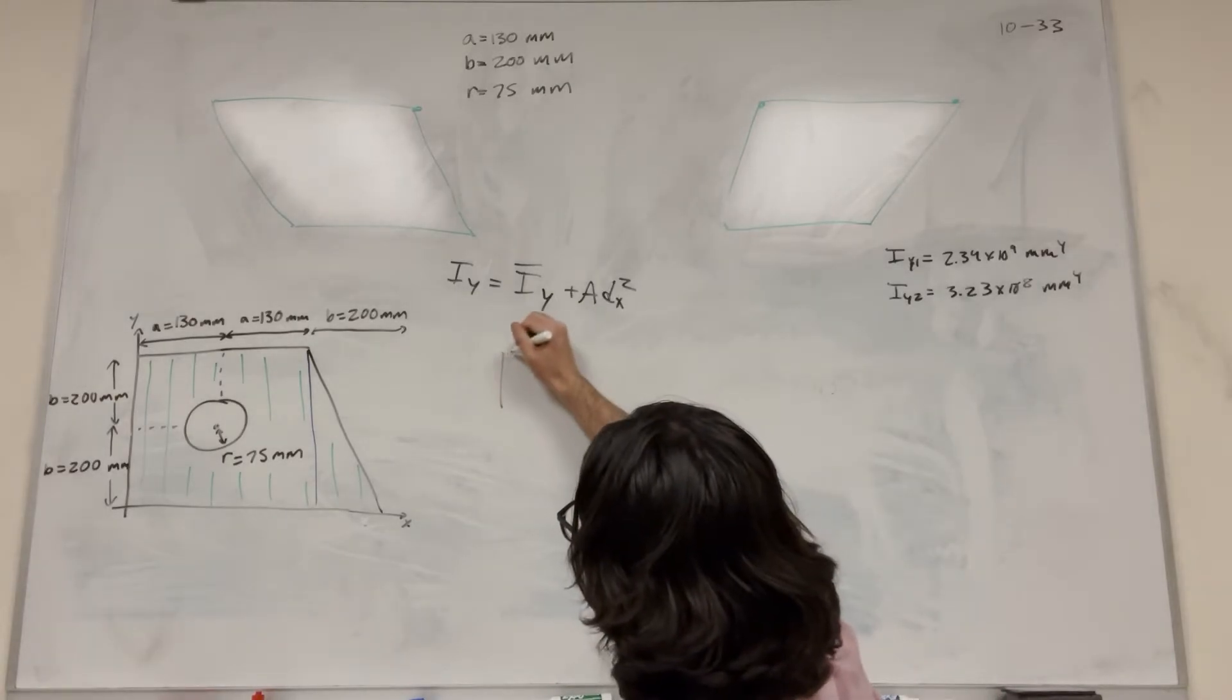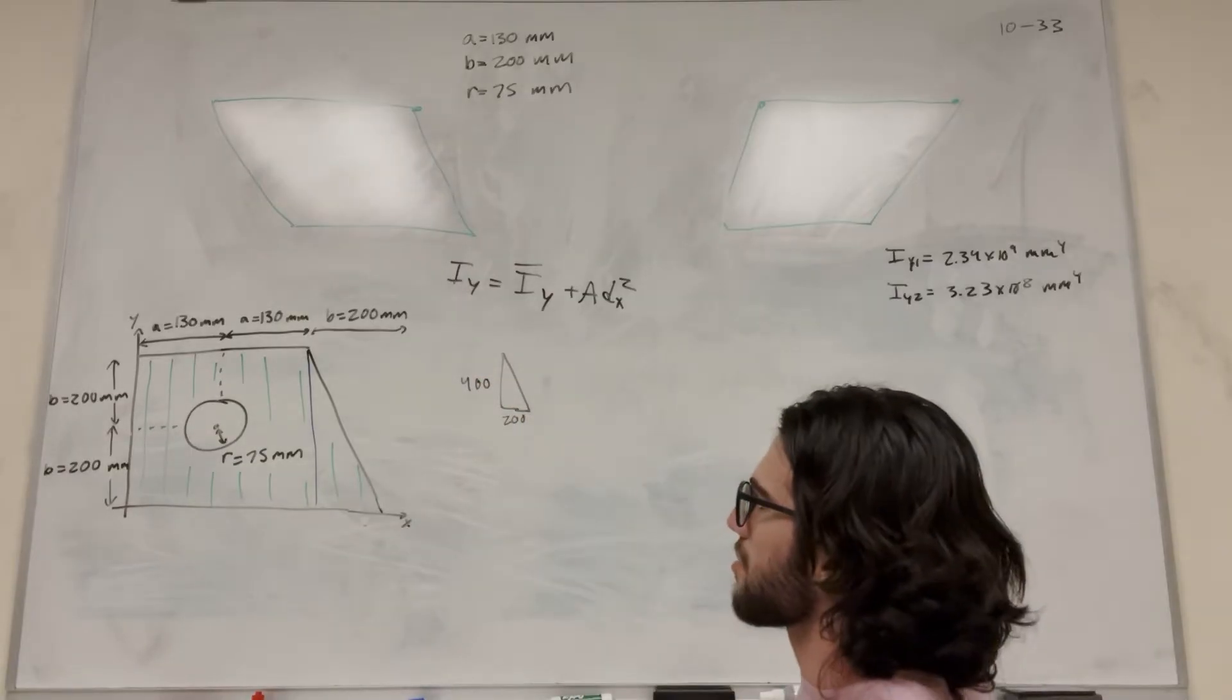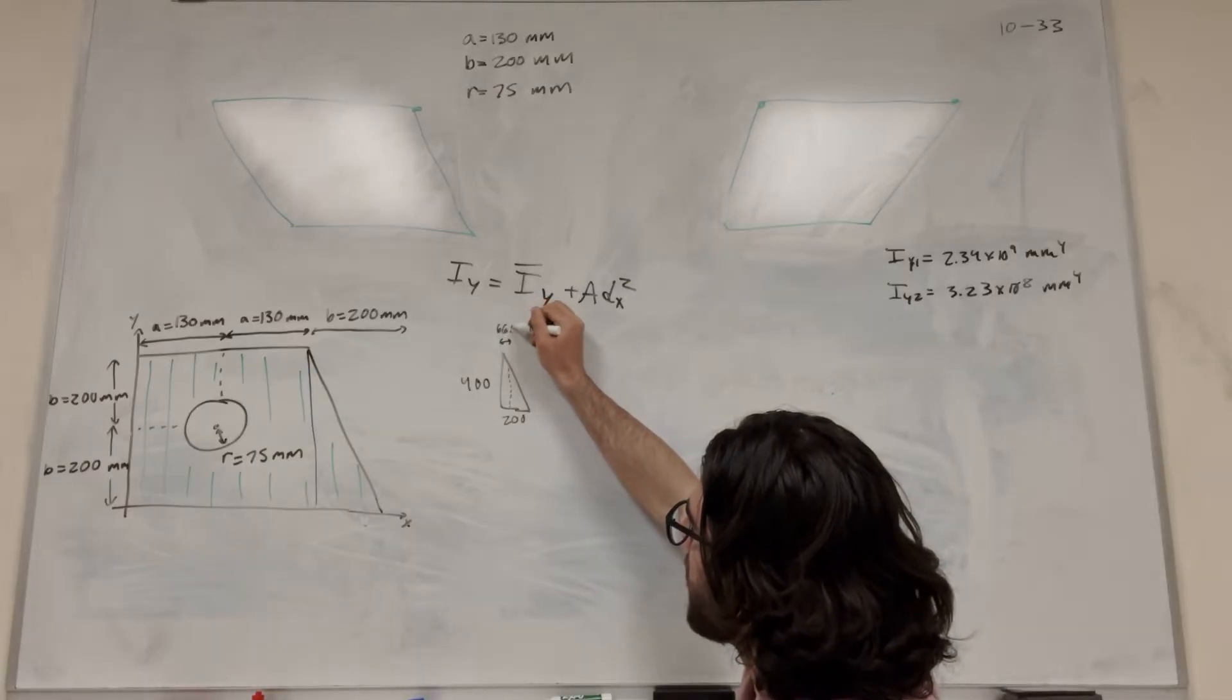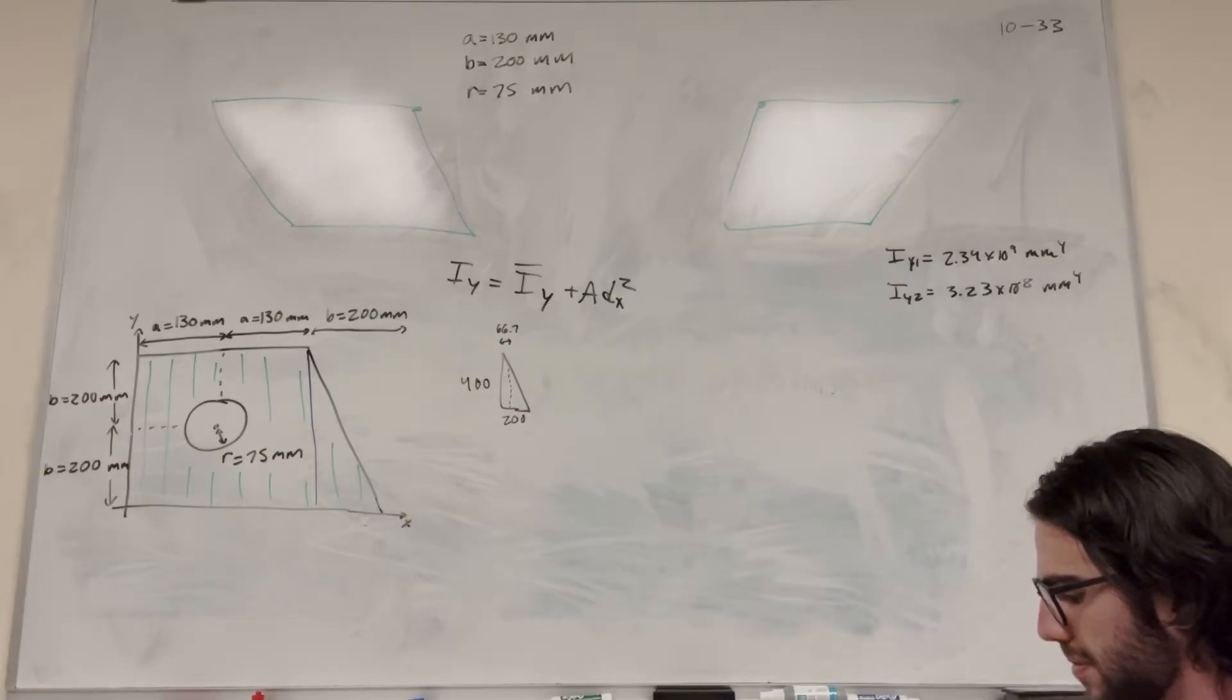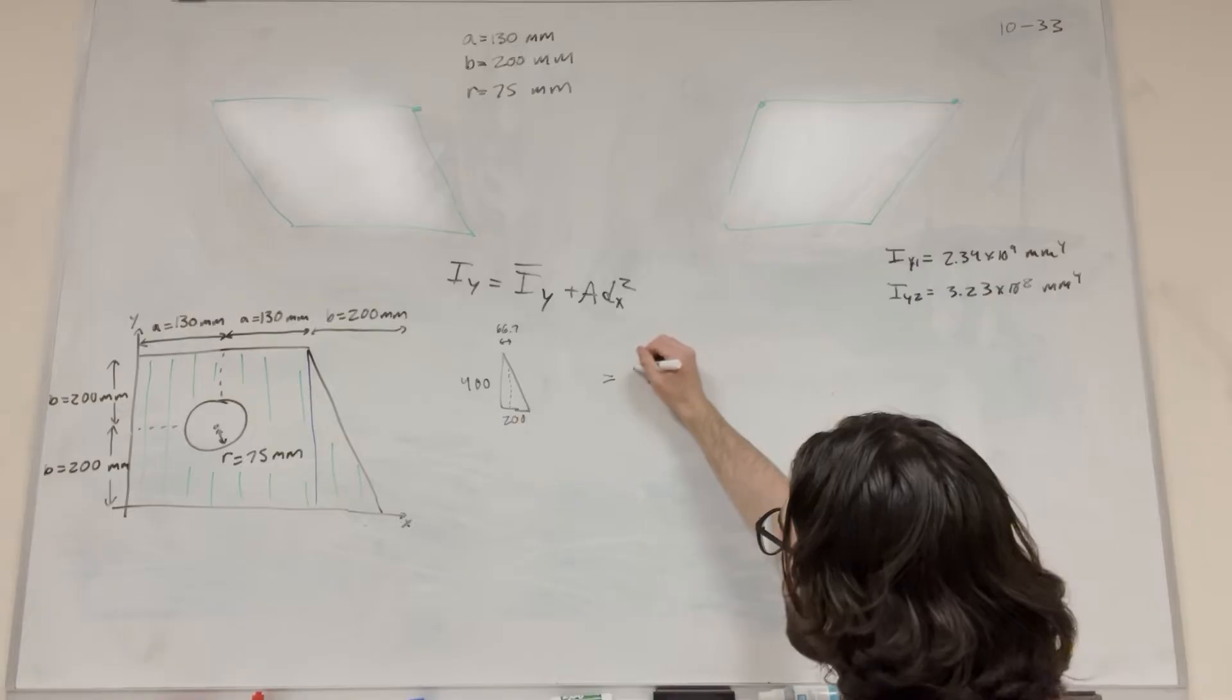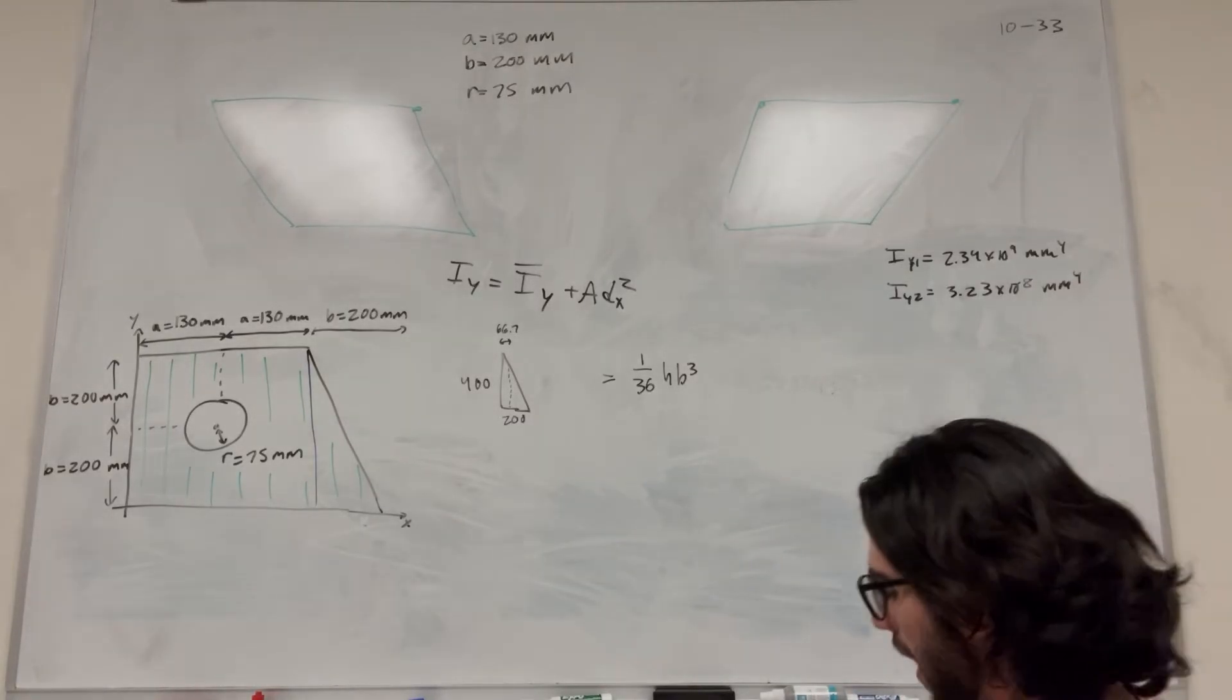We know that its base is 200, its height is 400. We don't need its hypotenuse for this question. But we know that its center of mass on the x is a third of the way across. So its center of mass, this distance is 66.7, a third of 200. Let's go ahead and plug this in. When you're doing a triangle, the equation for i-bar for a triangle, make sure you look this up, is 1 over 36 height base cubed. Similar to the rectangle, but just divided basically.